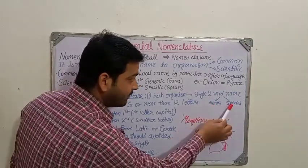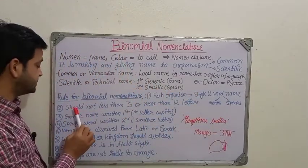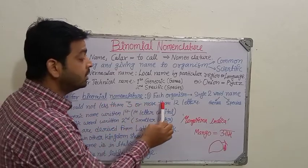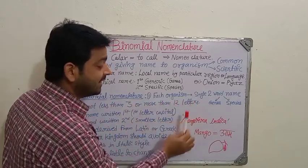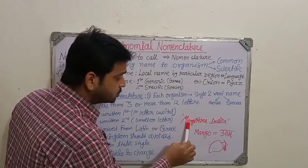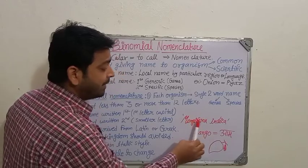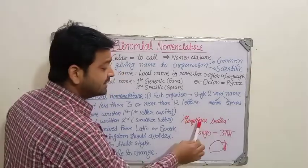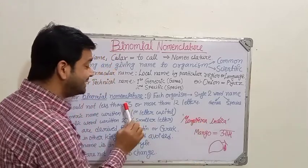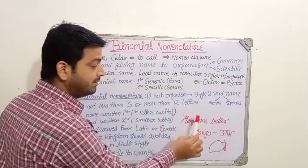Rule two: the name should not be less than three or more than twelve letters. For example, Mangifera has nine letters — one, two, three, four, five, six, seven, eight, nine — so nine letters in the genus, which is within the allowed range of three to twelve.